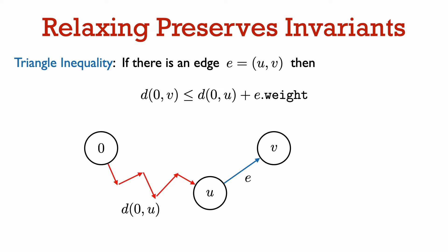The first key property of relaxing an edge is that it preserves our two invariants. This is true because of the triangle inequality: if there is an edge from vertex u to vertex v, then the distance from 0 to v is at most the distance from 0 to u plus the weight of edge e. This is because to walk from 0 to v, we can first walk from 0 to u, then walk along edge e to arrive at v. So the distance from 0 to u plus the weight of edge e is an upper bound on the distance from 0 to v.